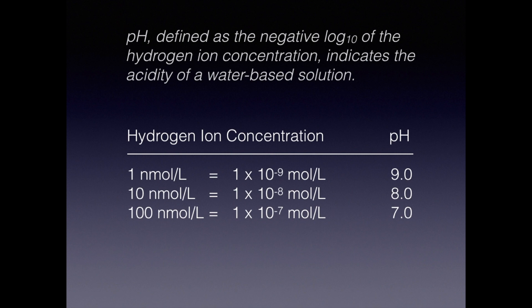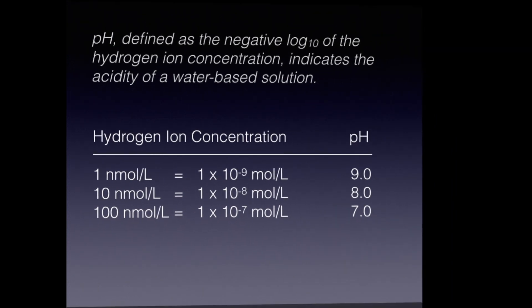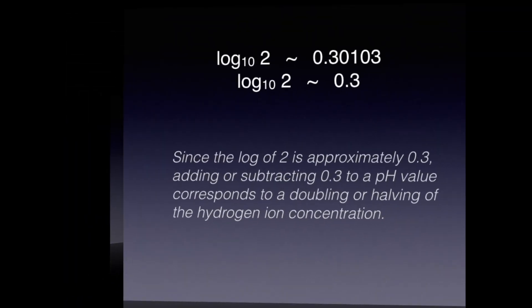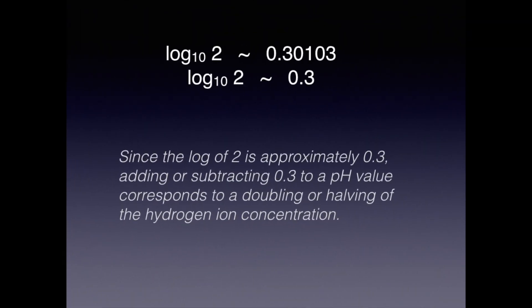There are several ways you can convert nanomoles of hydrogen ion concentration to pH. One way is to use a calculator to make the conversion. Alternatively, if you just remember that the log of 2 is about 0.3, you may obtain many pH values without a calculator. If we add or subtract 0.3 to a pH value, it will either double or halve the value of the corresponding hydrogen ion concentration.